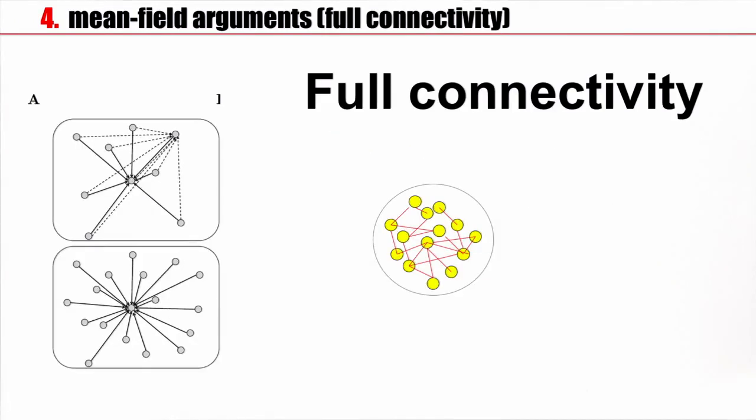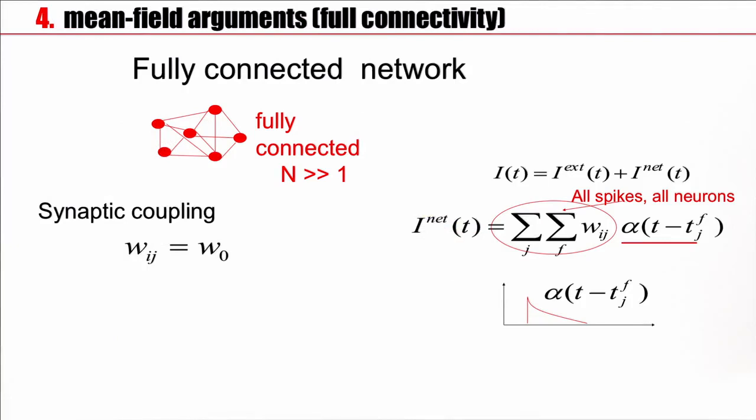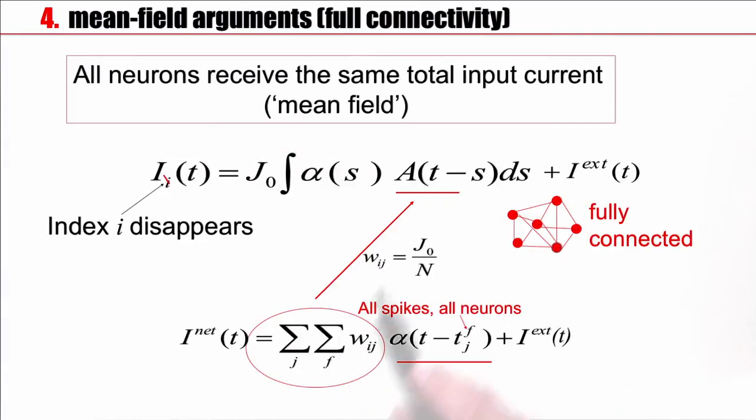For full connectivity, which means each neuron receives input from all other neurons in the network, we found a nice result. The total input current is the sum of all the different spikes of all the neurons. But this sum can be re-expressed with the population activity and the synaptic filtering kernel alpha of s. The message here is all neurons in the fully connected network receive exactly the same total input current. That's why it's called the mean field argument.